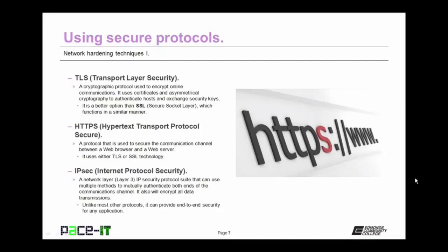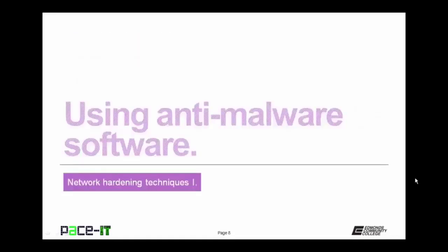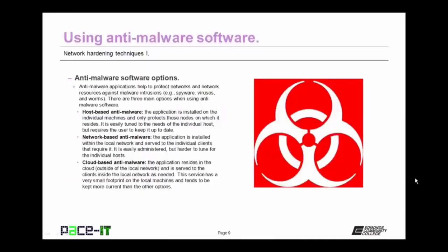Let's move to using anti-malware software. Anti-malware applications help to protect networks and network resources against malware intrusions such as spyware, viruses, and worms. There are three main options. There's host-based anti-malware — the application is installed on individual machines and only protects those nodes on which it resides. It's easily tuned to the needs of the individual host, but requires that the user keep it up to date. Then there's network-based anti-malware — the application is installed within the local network and served to the individual clients. It is easily administered and the network administrator can ensure that it remains up to date, but harder to tune for individual hosts.